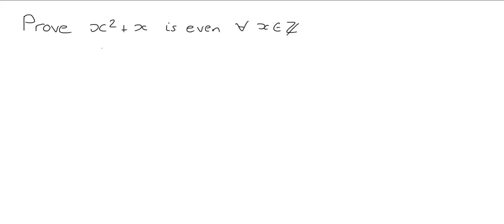We want to prove that x squared plus x is even for all integers x. So the way we're going to do this is something called a proof by exhaustion. That's where we consider all possible cases and show that in each case the statement we're trying to prove is true.